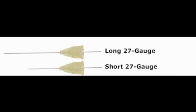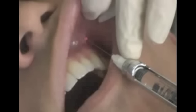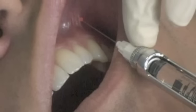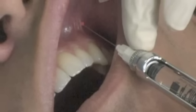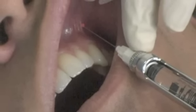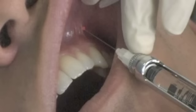Positive aspiration: negligible, negative — less than 1%. Gauge: 27 short. Landmarks: insertion is at the height of the mucobuccal fold above the apex of the tooth being anesthetized. Hold syringe parallel with the long axis of the tooth.